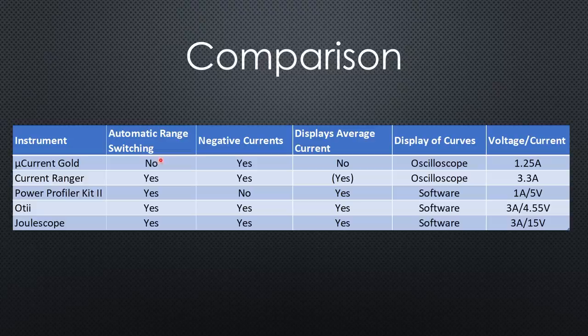My verdict. The power profiler 2 is a handy tool for the engaged maker or the IoT developer. But how does it compare with the other tools? The microcurrent Gold has no automatic range switching and will create brownouts if we want to measure deep sleep current. So, we can only measure either operation or deep sleep. Not very comfortable. So, I would only buy it for application areas where we do not have such fluctuating currents. As an advantage, it can also measure negative currents.